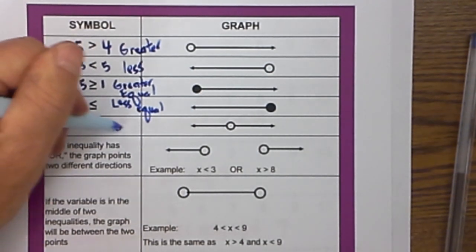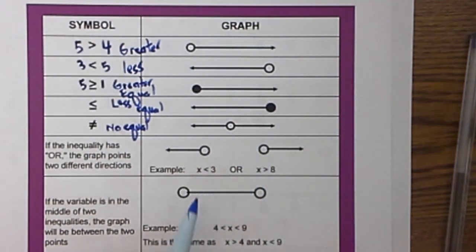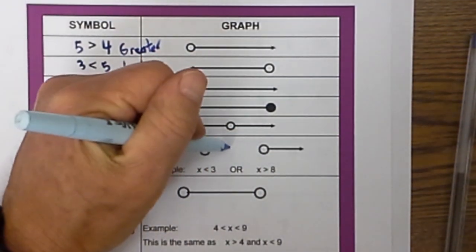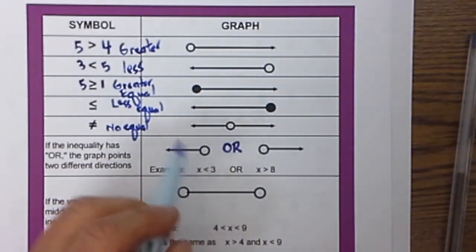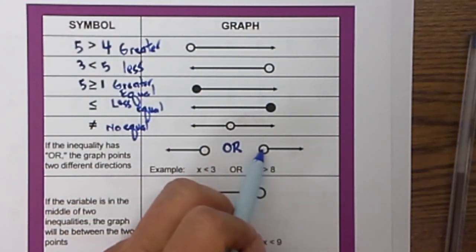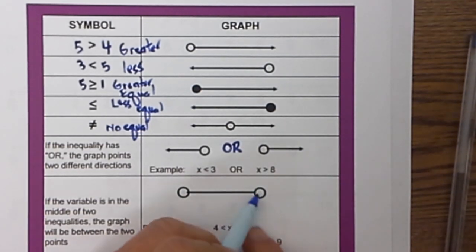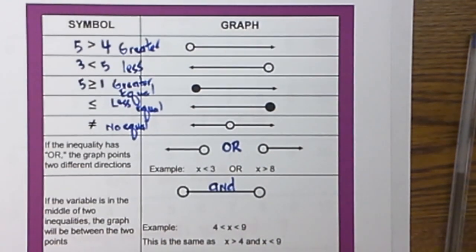This next one is not equal, and then sometimes you get on a number line an example like this. Whenever you have two going in opposite directions, you use OR. In this particular example, since it is an open, it would be less than or greater than. And when you have an example like this, you use AND.